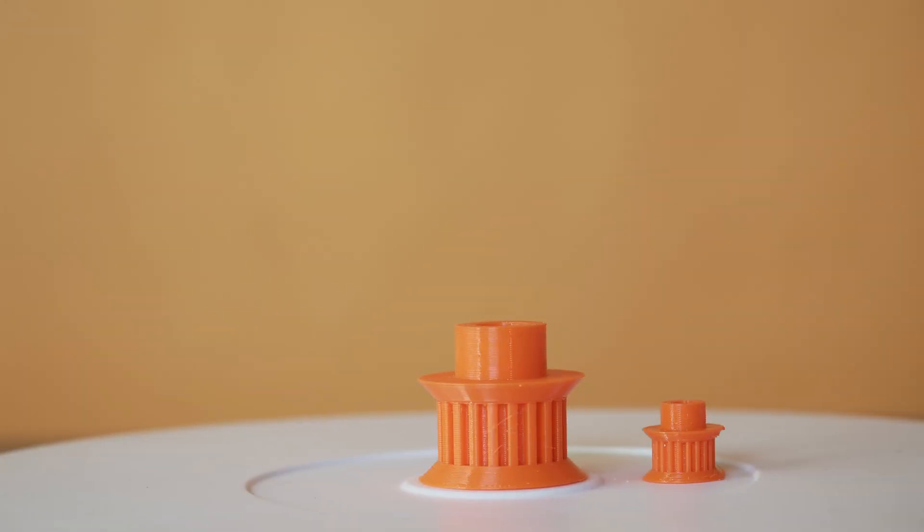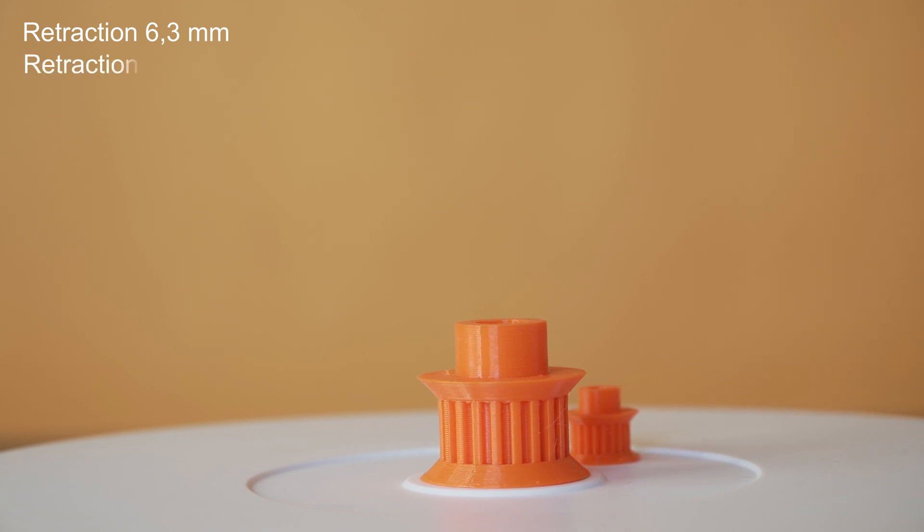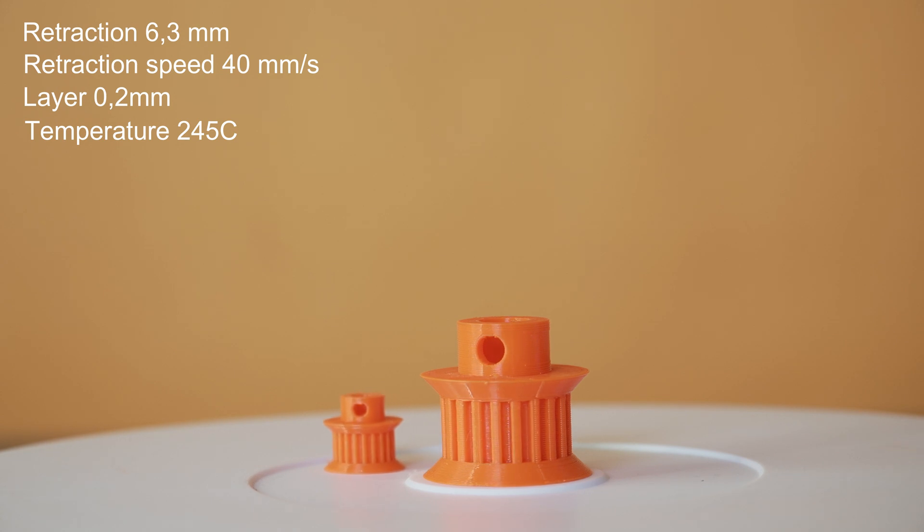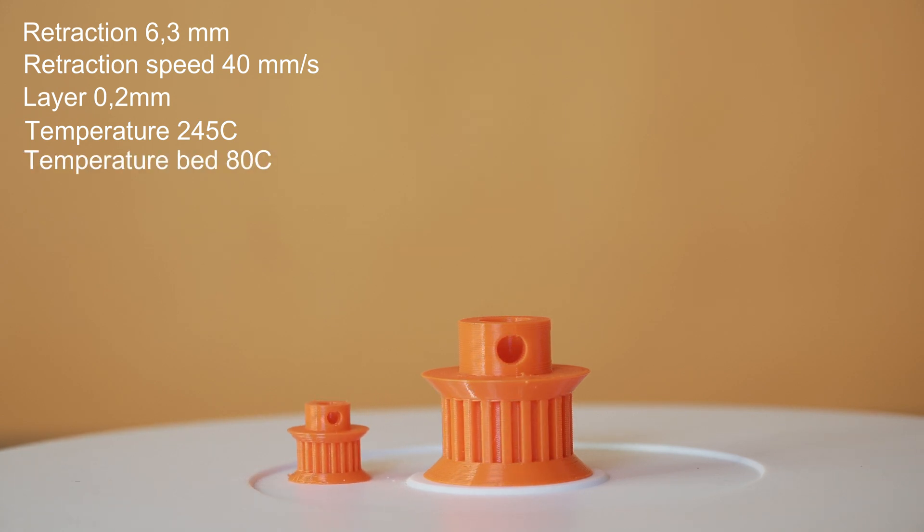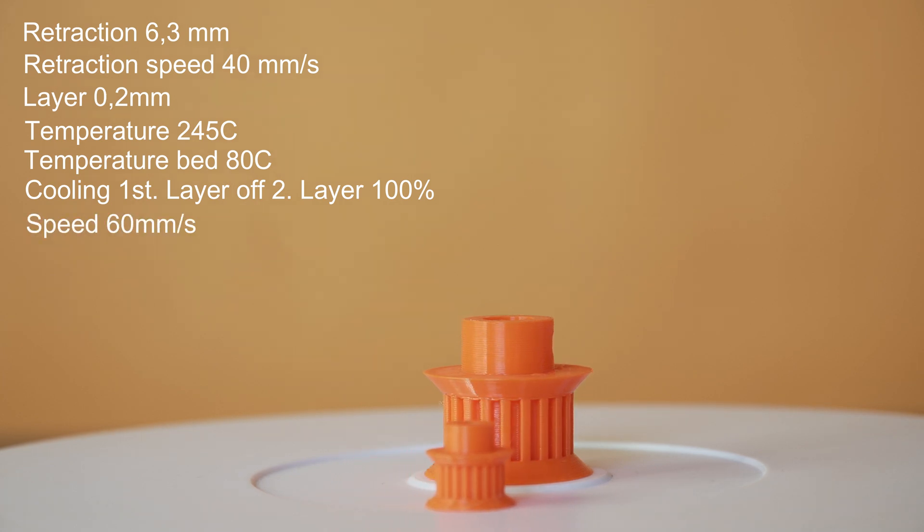So for the PETG, I use a retraction on 6.3 millimeters. The retraction speed will be 40 millimeters per second. Layer height on this print was 0.2. Temperature on the nozzle was 245 degrees. And temperature on the bed was 80 degrees. Cooling on the first layer I have set to off. And the second layer 100% again. And speed 60 millimeters per second. And it came absolutely gorgeous.